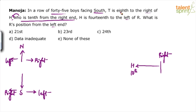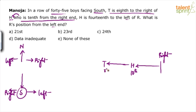Now look at the previous part of this statement: T is 8th to the right of H. When persons are facing south, right should be taken towards our left. So T is 8th to the right of H, meaning T is placed to the left on our paper. From H, T is 8th. Overall, from the right end, T's position will be 10 plus 8 = 18th. So T's position is 18th from the right end.